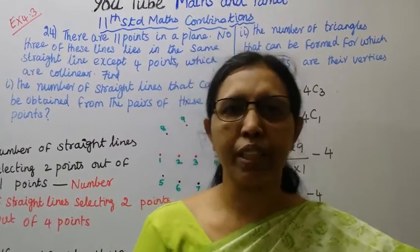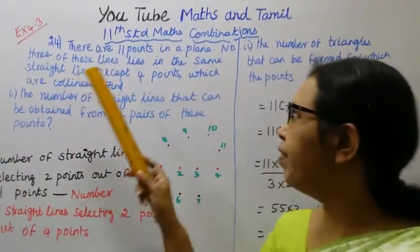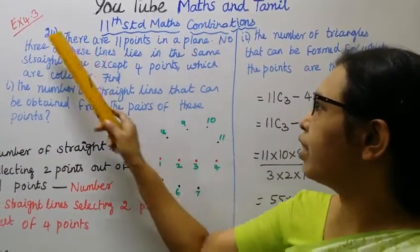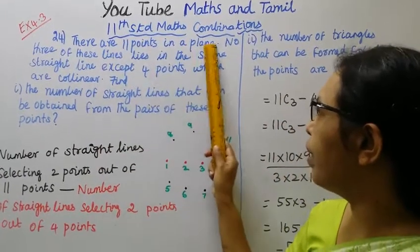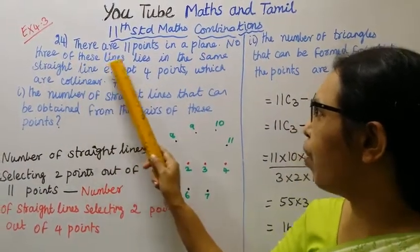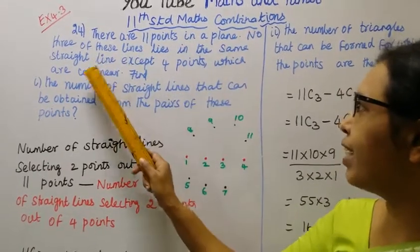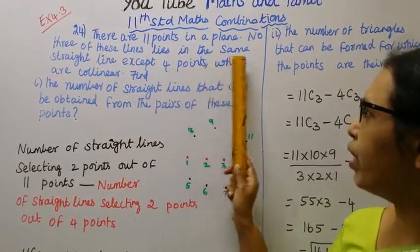Hello students, welcome to Maths and Tamil channel. 11th standard Maths, Combination Exercise 4.3, Question 24. There are 11 points in the plane. No three of these points lie in the same straight line except 4 points which are collinear.